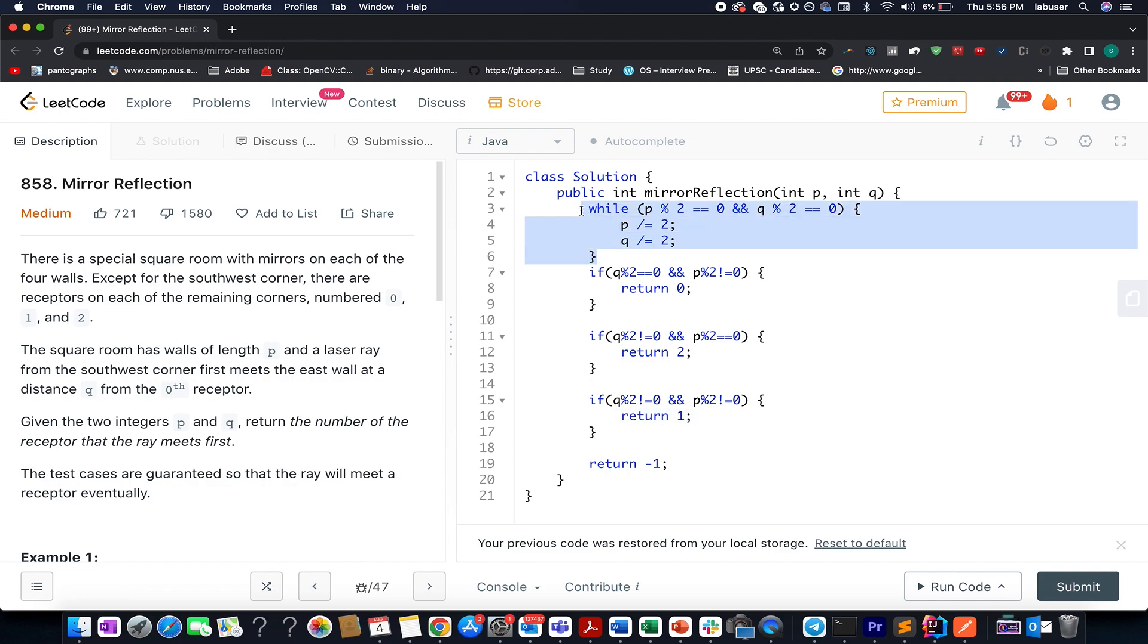what I have done I have removed the common factors of two from both p and q till the time both p and q are even in nature. As soon as either p turns out to be even odd or q turns out to be odd, we abort this process and those values of p and q would be the terminal value. So you can draw a few test cases and you will yourself will realize that why are we doing this. So let's submit this up.